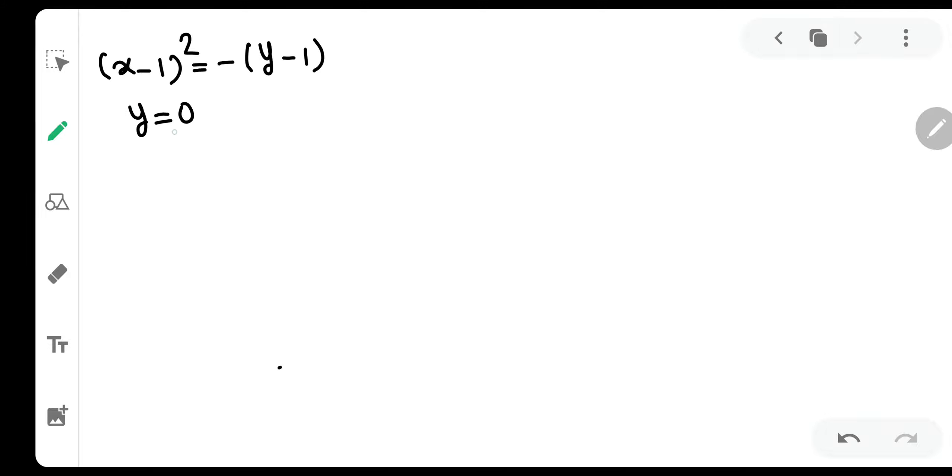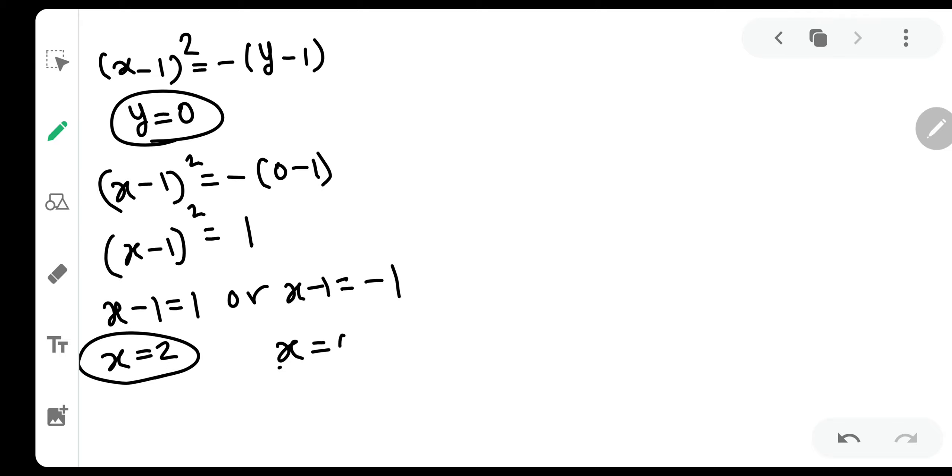As y will be equal to 0 on x axis, so x minus 1 the whole square has to be equal to minus 0 minus 1. So definitely x minus 1 the whole square has to be equal to 1. When you take the square root x minus 1 will be equal to 1 or x minus 1 will be equal to minus 1. Over here x is coming out to be 2 and over here x is coming out to be 0.